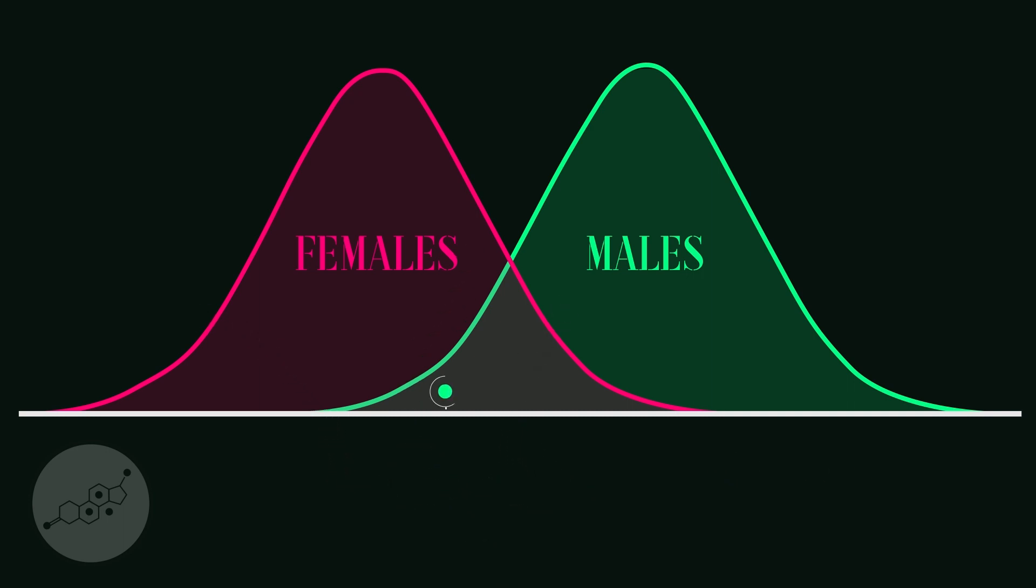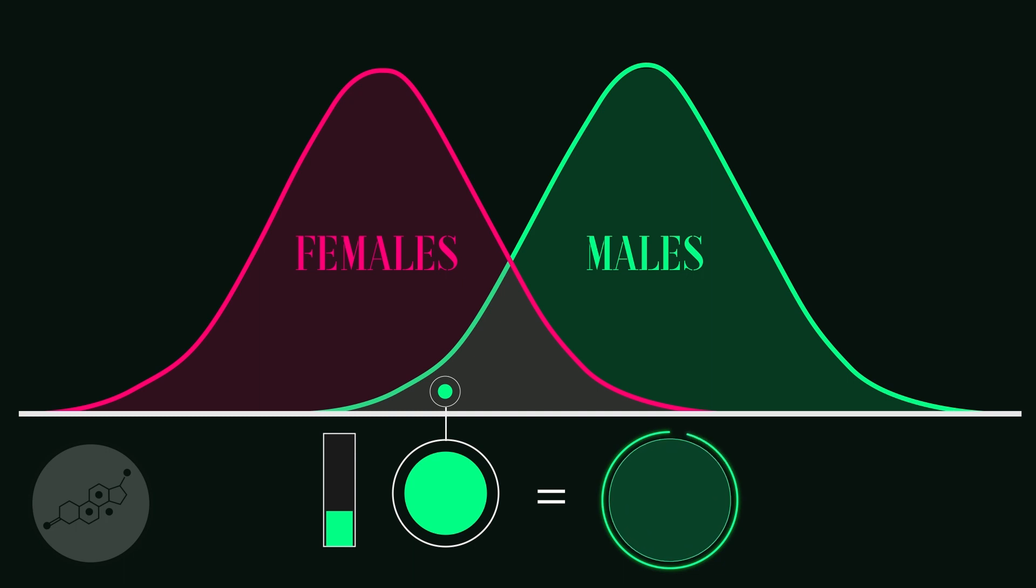For example, a male who has less T than the average male does not become less male or more female. He is still a male, as his body organized to support small gametes.